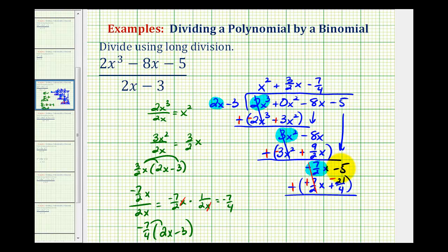Here we have negative 5 plus negative 21 fourths. Negative 5 would be negative 20 fourths. So negative 20 fourths minus 21 fourths would be negative 41 fourths, which is our remainder.